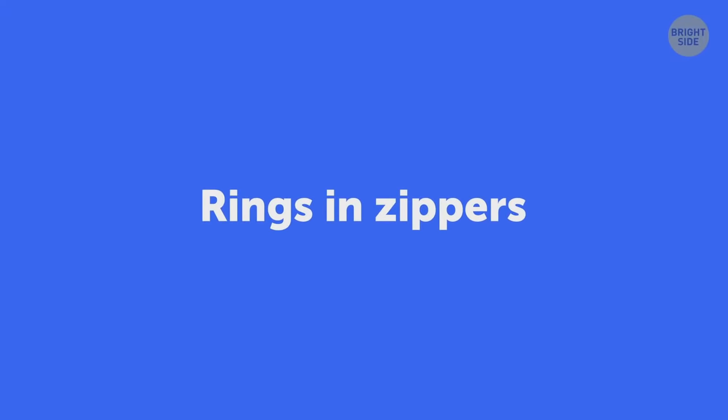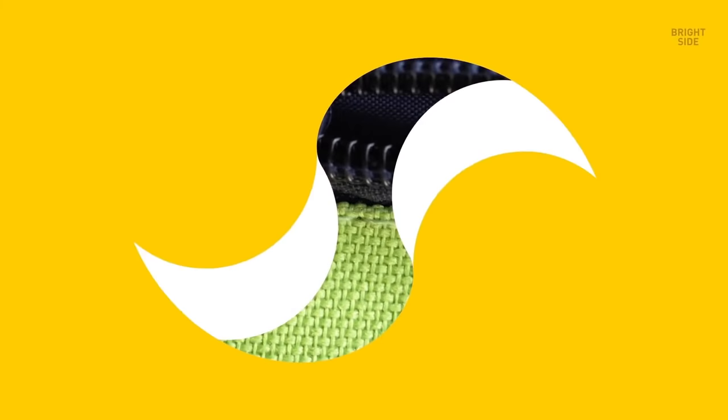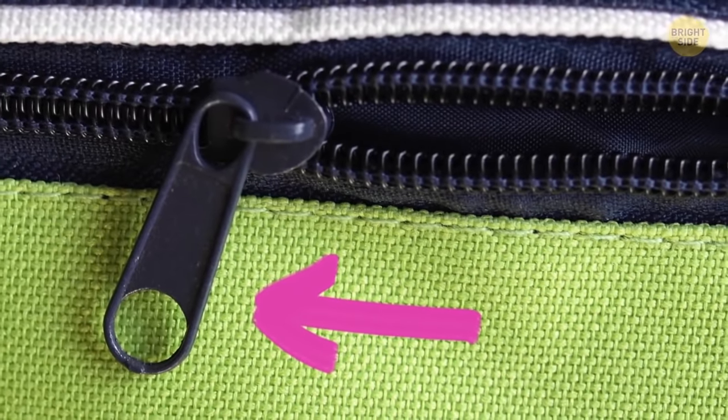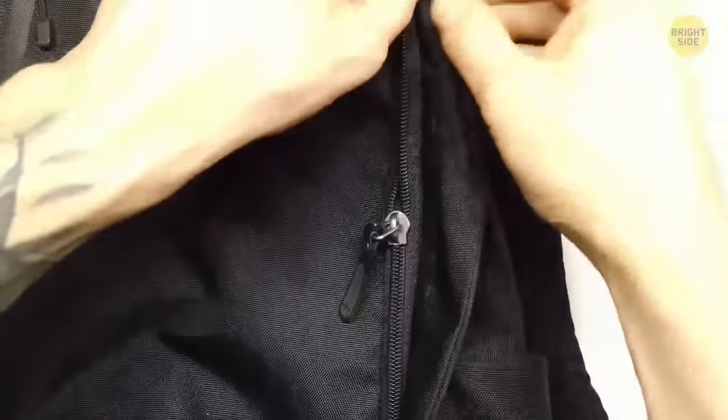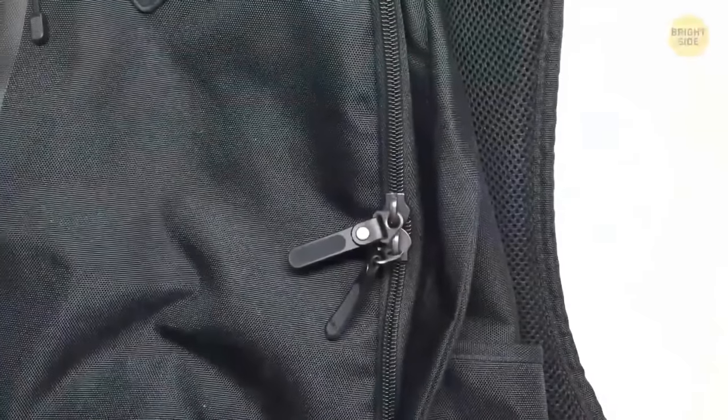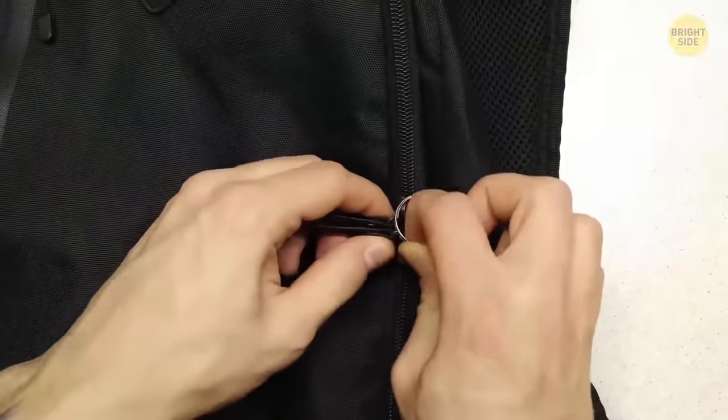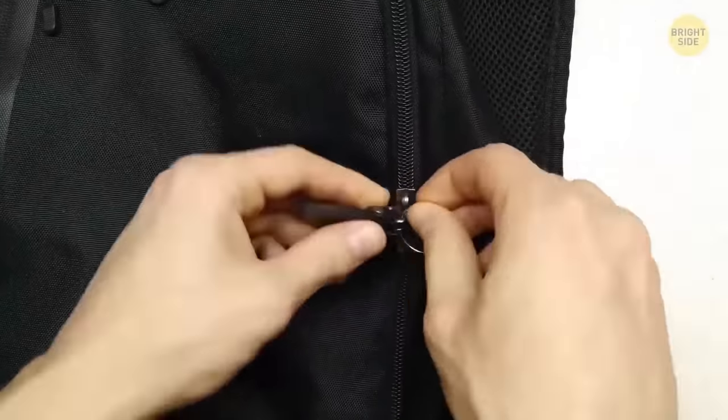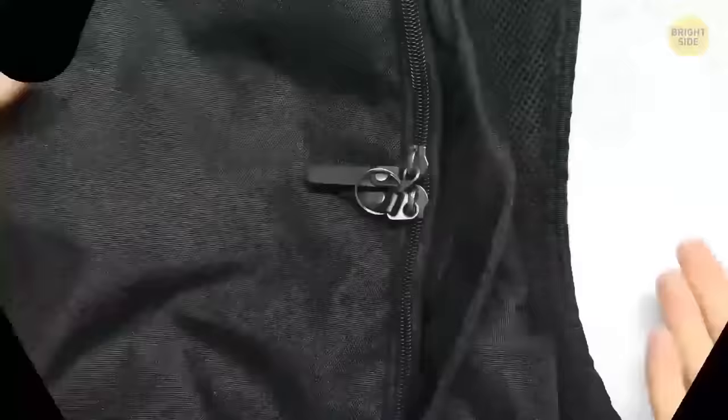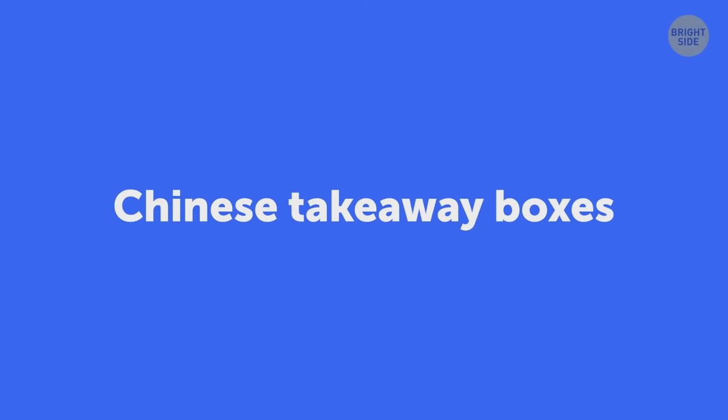Ever paid attention to those outer rings and zipper sliders, especially when two sliders are used together? These rings are added so that you can connect the sliders with a lock and keep sticky fingers away.